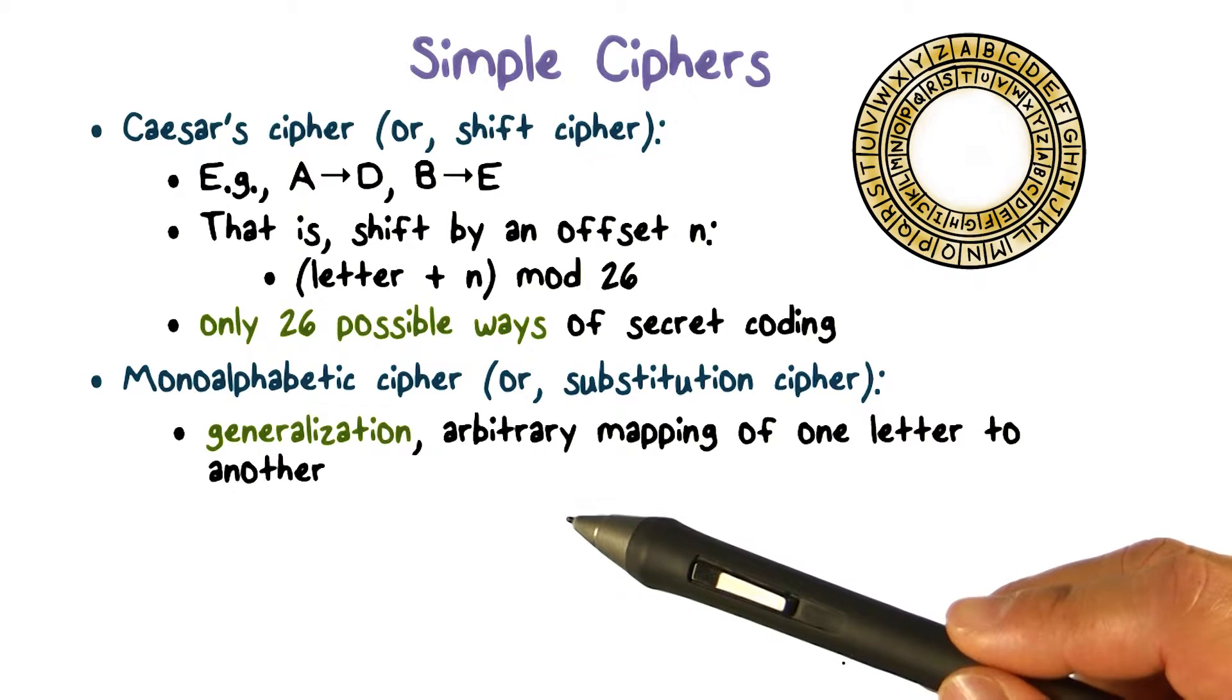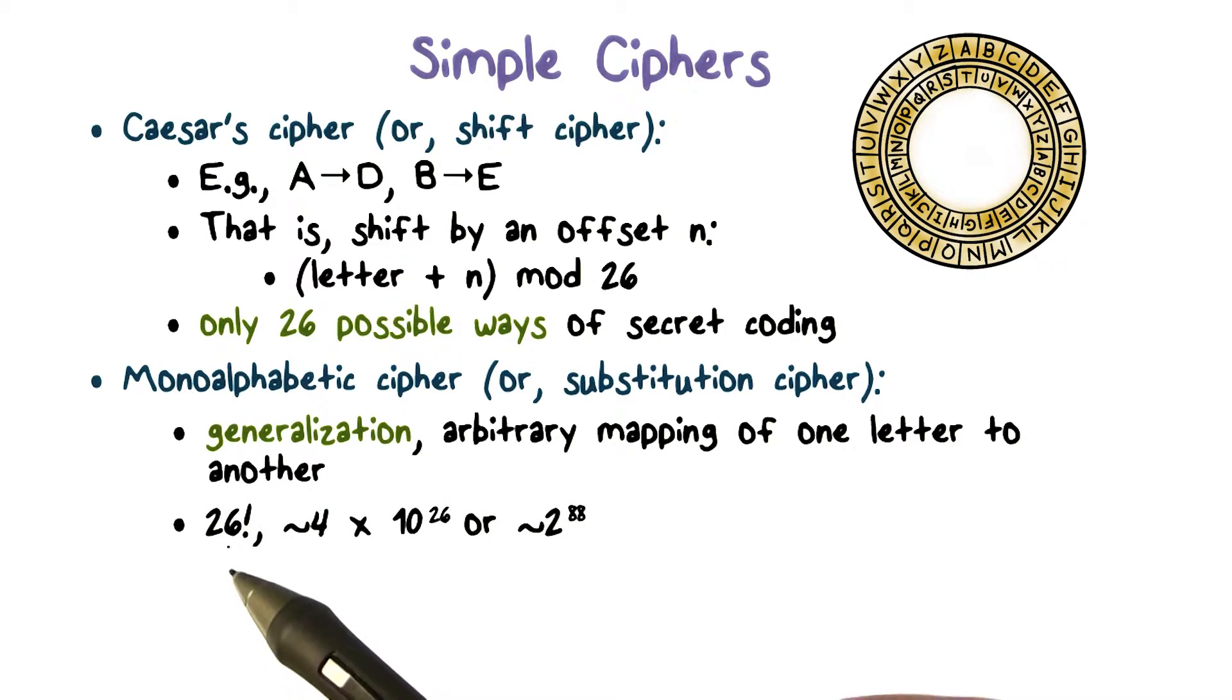Can you tell how many possible keys are out there? Meaning, how many possible ways to map one letter to another? The answer is 26 factorial. Because there are 26 factorial number of ways to map one letter to another. Please note that n factorial is much larger than 2 to the n. For example, 26 factorial is approximately 2 to the 88, which is much larger than 2 to the 26.